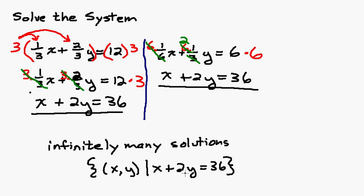Which is all the points on the line x plus 2y equals 36. These two original equations that we had when we started, they're the same line. If you were to graph them they would just land right on top of each other. They don't have just one point where they cross, they land right on top of each other.